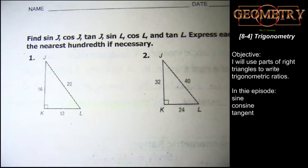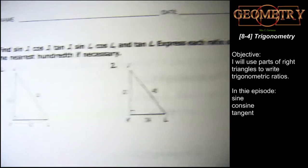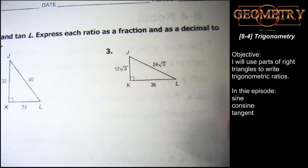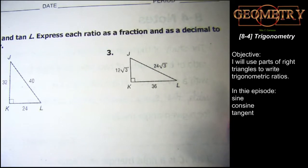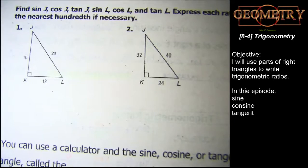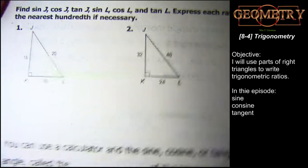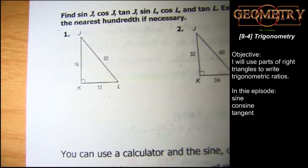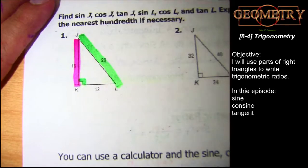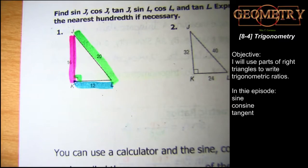Find sine of angle J, cosine of angle J, tangent of angle J, sine of angle L, cosine of angle L, and tangent of angle L. We're only going to do half of it. Express the ratio as both a fraction and a decimal to the nearest hundredth if needed. Identify the hypotenuse — that's the side with 20.